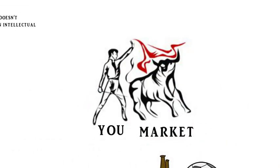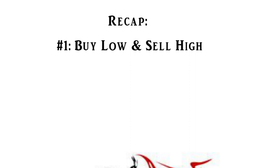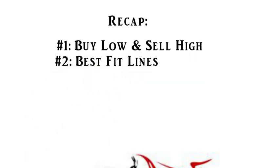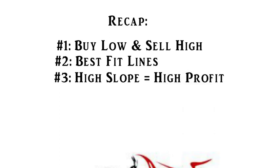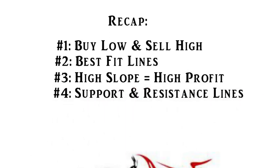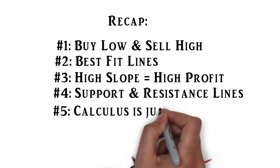And so when you're trading, don't try to control the market. Understand that it changes with time. So just to recap on this lesson, you're going to buy low and sell high to make profits. You're going to use best fit lines to approximate chaotic stocks. The higher the slope means the higher the profits. Using support and resistance lines can show you if the trend is weakening or strengthening. And most importantly, calculus is just a study of rates of change.